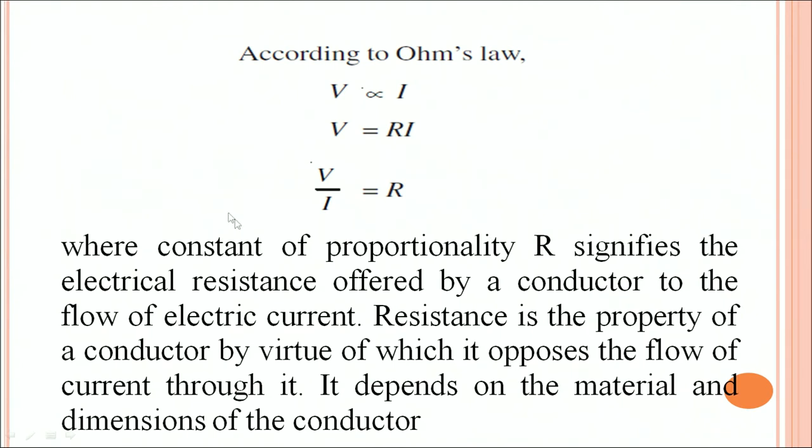R is the constant of proportionality, and this is known as the electrical resistance offered by a conductor to the flow of electric current.